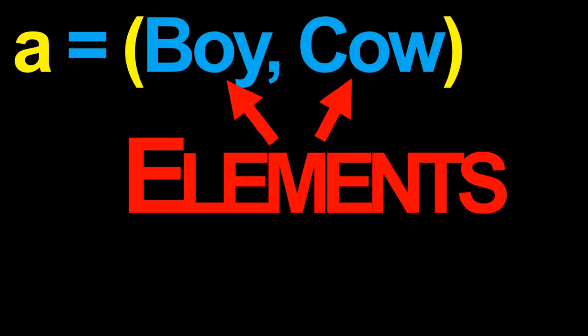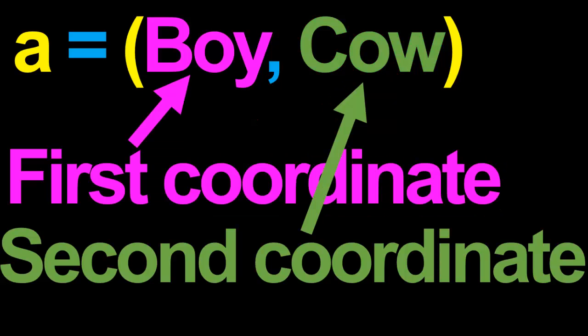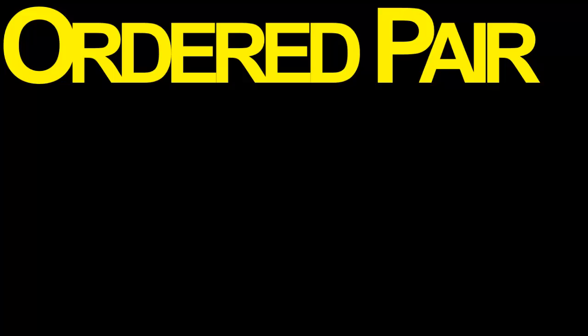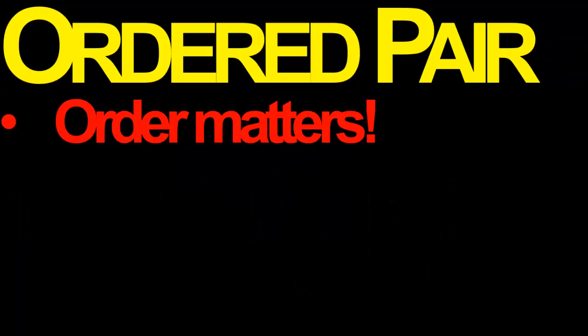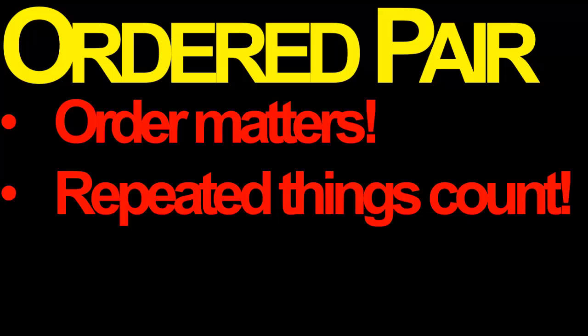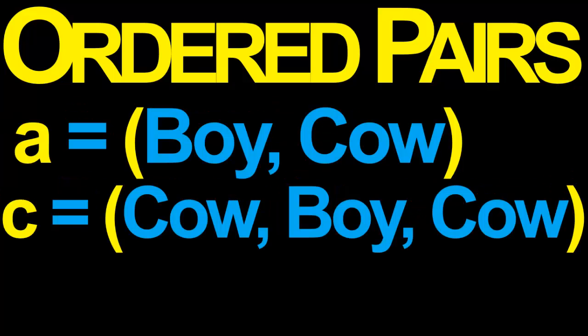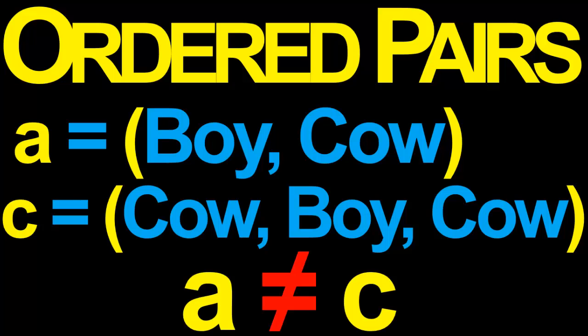Just as we call the objects in a set its elements, we can also call the objects boy and cow in the ordered pair A its elements. However, since the order of the objects does matter in an ordered pair, we shall instead refer to them as the first coordinate of A and the second coordinate of A. To summarize: there are two important differences between an ordered pair and a set of two elements. First, the order of the objects matters — so the ordered pair A is not the same as the ordered pair B. Second, repeated things do count — so the ordered pair A is not the same as the ordered triple C.